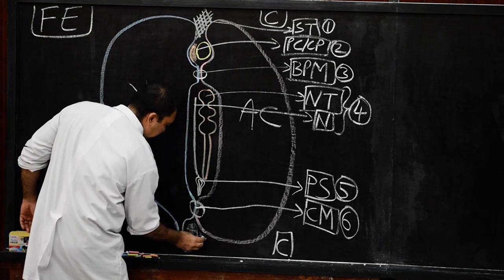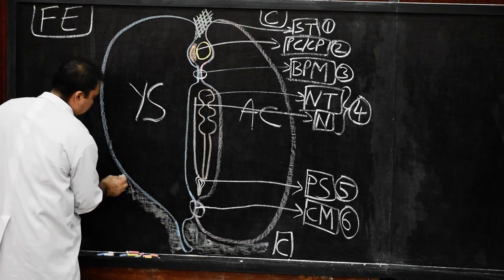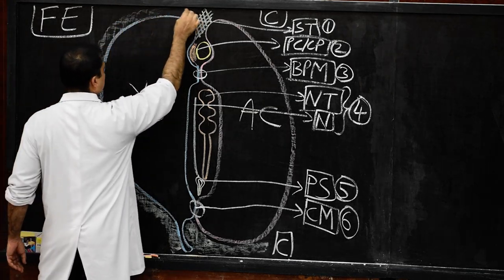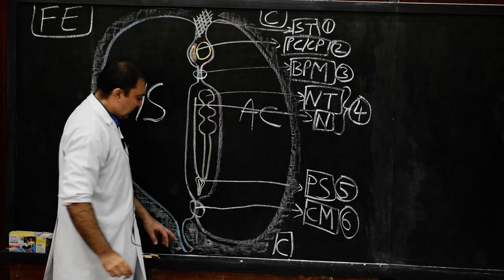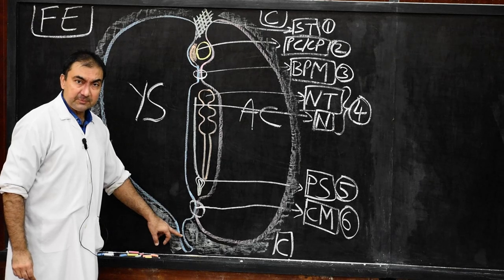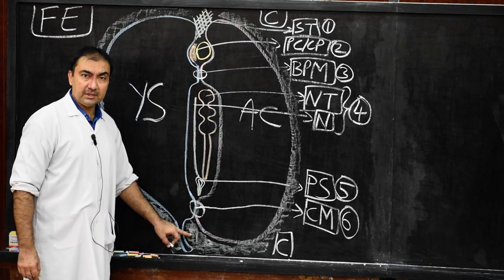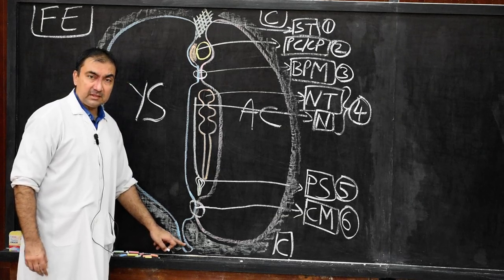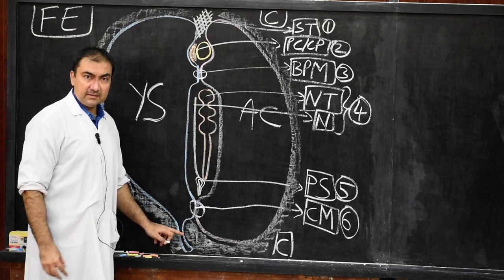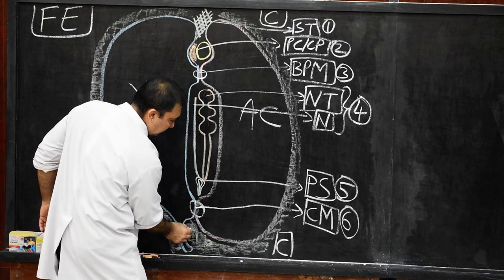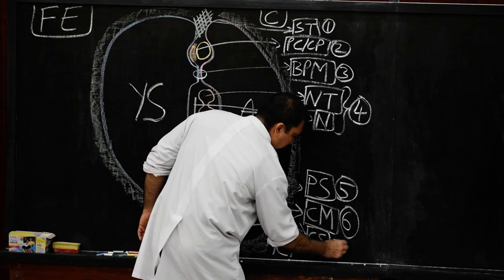In structure number seven, draw the extra embryonic mesoderm. Surround both the yolk sac and the amniotic cavity by a layer of primary — extra embryonic — mesoderm. In the caudal end, where the allantric diverticulum is present, this portion will form the connecting stalk. So the portion of extra embryonic mesoderm in the caudal end of the embryo, where the allantric diverticulum projects into it, is the connecting stalk — structure number seven.